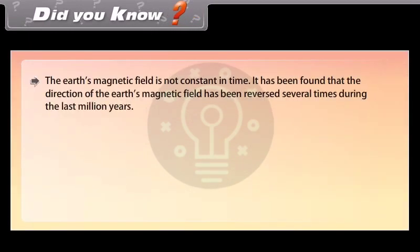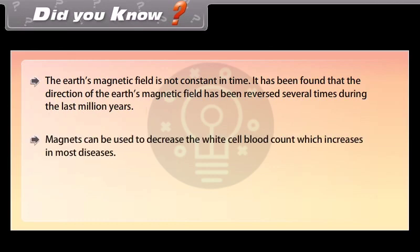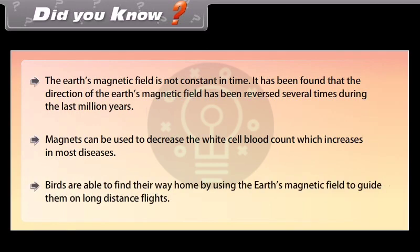Did you know: Earth's magnetic field is not constant in time — the direction of Earth's magnetic field has been reversed several times during the last million years. Magnets can be used to decrease the white blood cell count, which increases in most diseases. Birds are able to find their way home by using Earth's magnetic field to guide them on long-distance flights.